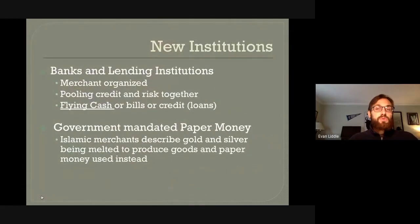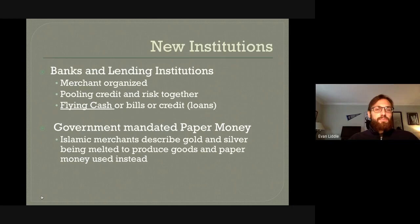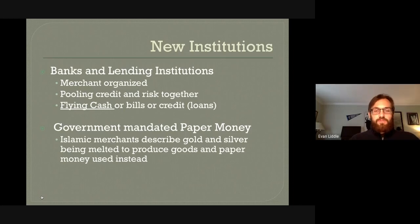There were also a series of new economic institutions — by institutions, we mean organizations. We began to see the rise of banking institutions, merchant-organized lending institutions and places to keep money safe. Today we think of government banks, but at the time there was no such thing as a bank. Merchants began organizing these institutions as a sort of pooling of credit and risk together — merchants could store their money in a place where it wouldn't be potentially lost.